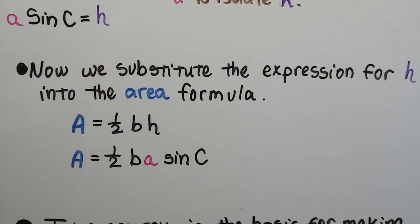Now we substitute the expression for h, this a sine of c, right here, into the area formula. So instead of b and h here, we have b times a sine of c. So the area is going to equal 1/2 b times a sine of c.